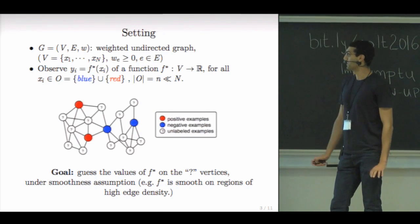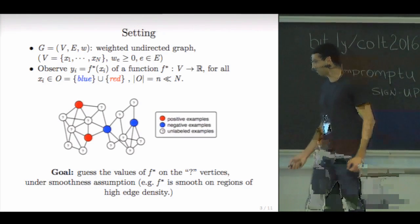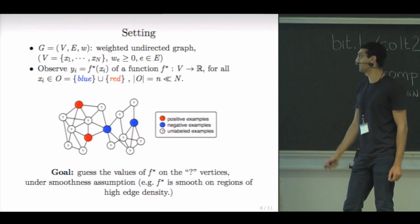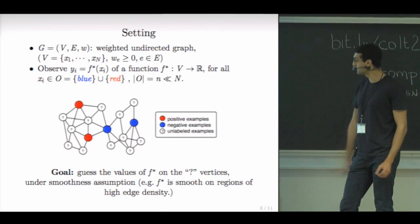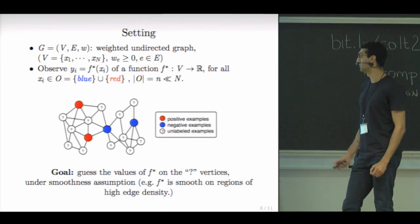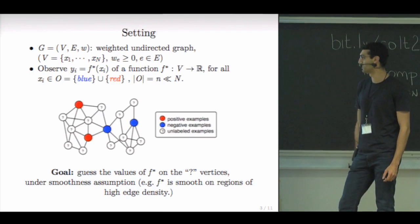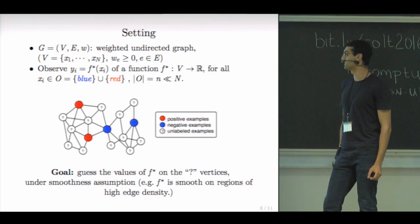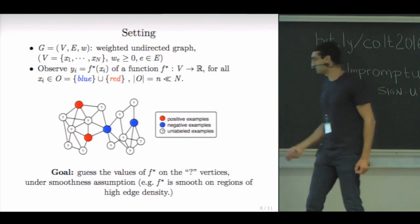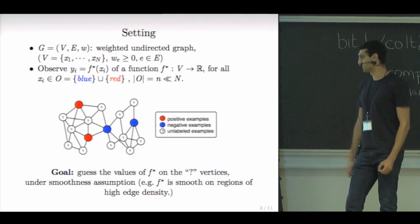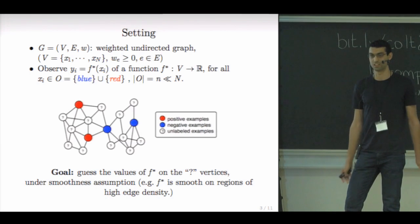So in this specific setting of our paper, we study this problem on a graph. So we have a graph G. We denote its vertices by x's, and each edge has a non-negative weight w. So there is an underlying function f star that takes real values on each vertex. And we get to observe a handful of the values of x on a handful of vertices, and the objective will be based on the knowledge of the values on these vertices and the topology of the graph. We would like to infer the value that is taken by this function f star on the remaining vertices. Of course, this problem is ill-posed if you don't assume anything about f star. So we're going to have to assume some smoothness condition. For example,